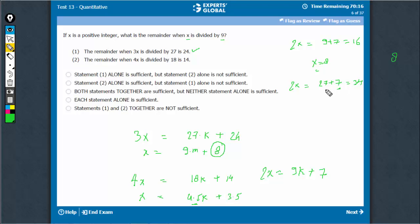34. I used plus 7 because I know this 2x leaves remainder 7 with 9. So, in this case, 2x is equal to 34. x is equal to 17 and therefore, x when divided by 9 will still give 8 as remainder.